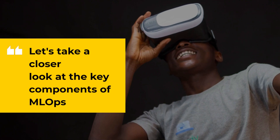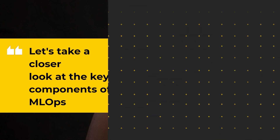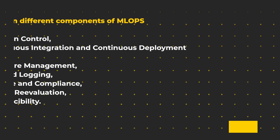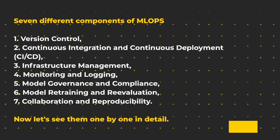Let's take a closer look at the key components of MLOps. There are 7 different components: 1) Version Control, 2) Continuous Integration and Continuous Deployment (CI/CD), 3) Infrastructure Management, 4) Monitoring and Logging, 5) Model Governance and Compliance, 6) Model Retraining and Re-evaluation, and 7) Collaboration and Reproducibility. Now let's see them one by one in detail.